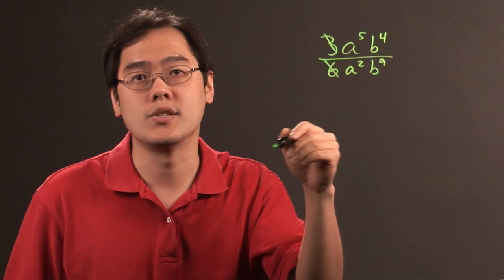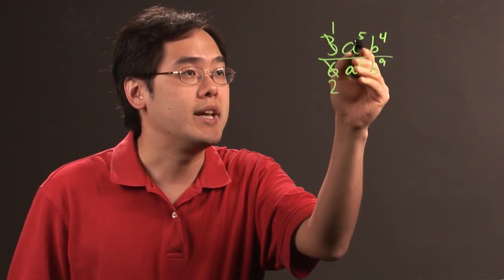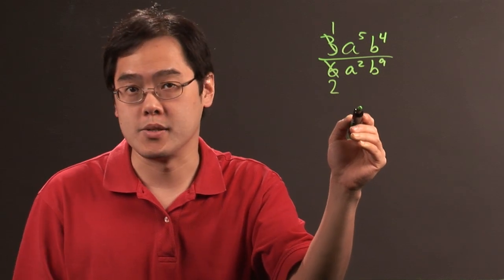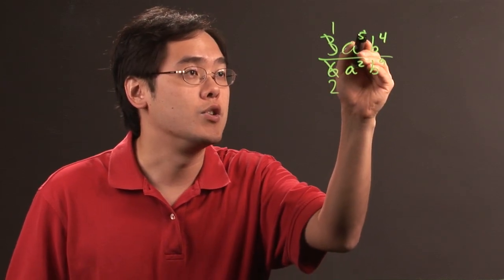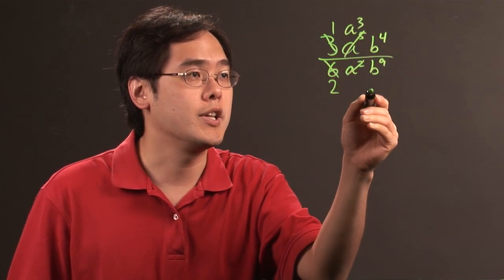So for example, if you have the 3 and the 6, you know 3 and 6 reduces by 3. There's a 1 left over, there's a 2 left over. With a to the 5th and a squared, because the bases match, you can reduce by 2 of them. So there would be a to the 3rd and the a's are completely gone.